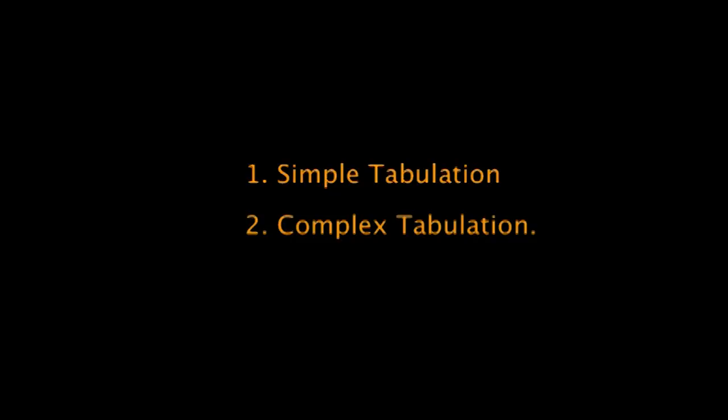Types of tabulation: in general, tabulation is classified into two parts — simple tabulation and complex tabulation. Simple tabulation gives information regarding one or more independent questions. Complex tabulation gives information regarding two mutually dependent questions.